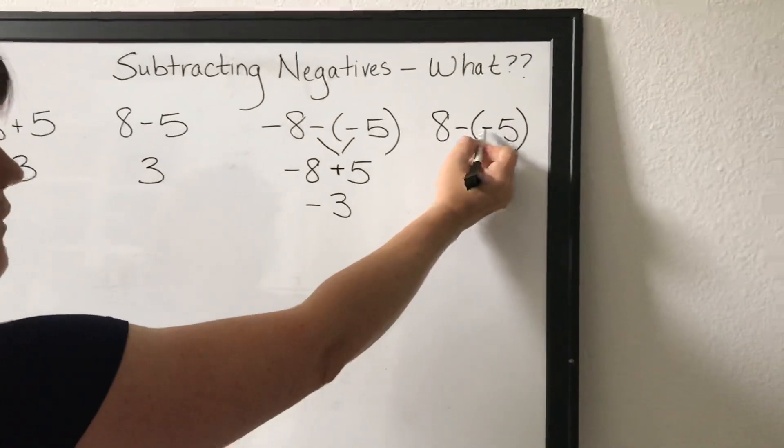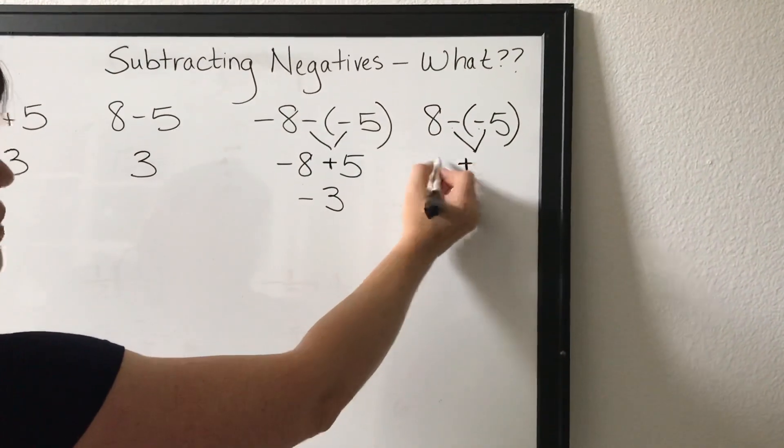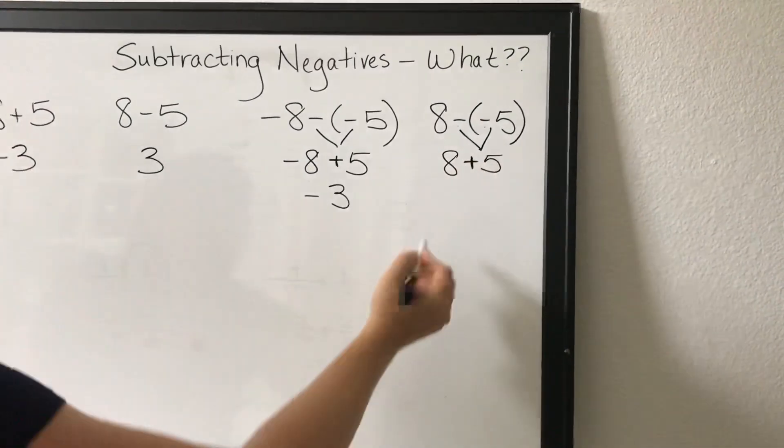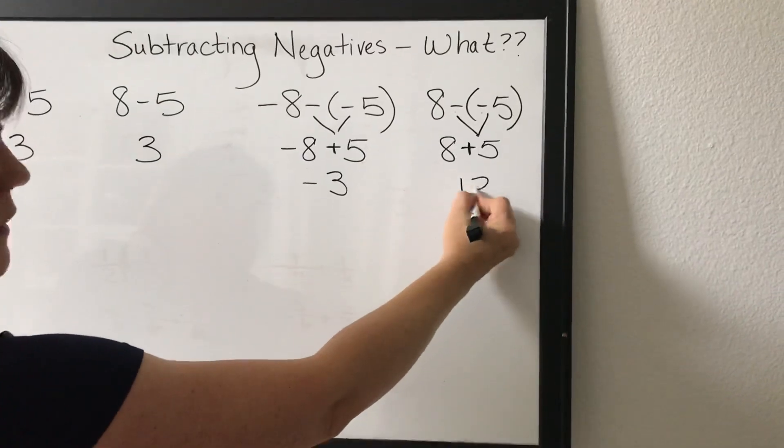Again, negative negative. So you can change that to a positive symbol. Oh, eight positives, five positives, thirteen.